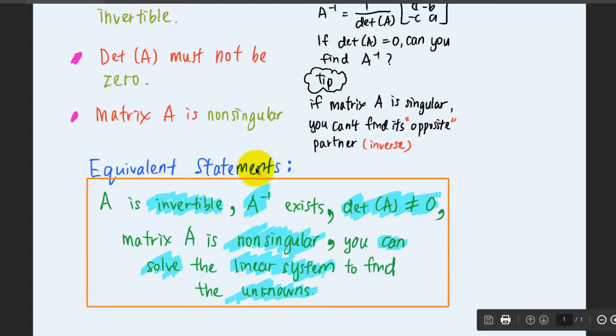Summing everything up, the equivalent statement is basically saying that if A is invertible, then the inverse of A must exist, and the determinant of A must not equal zero, and the matrix A is non-singular. So you can solve the linear system to find the values for the unknowns.